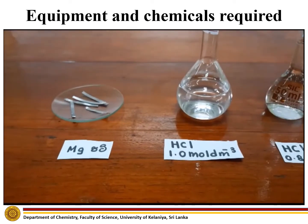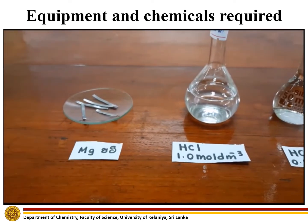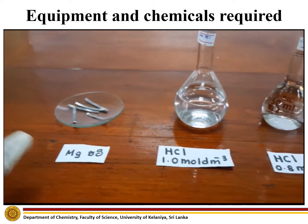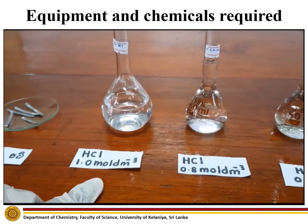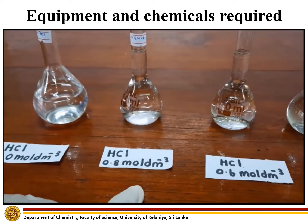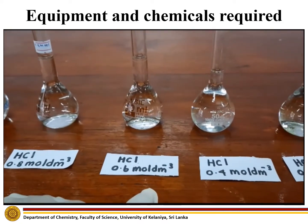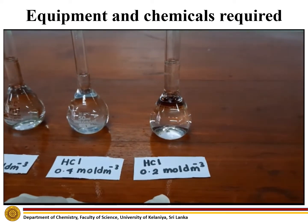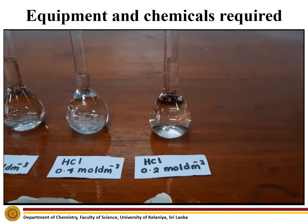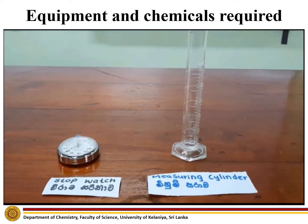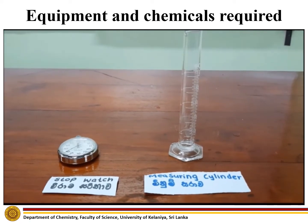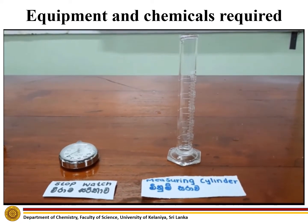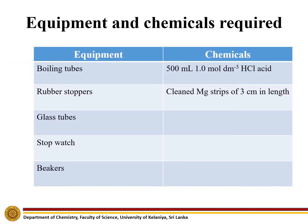The chemicals required for this experiment are magnesium strips and HCl solutions of 1.0, 0.8, 0.6, 0.4, and 0.2 mol per cubic decimetre. The laboratory equipment required for this experiment are a stopwatch and a measuring cylinder.